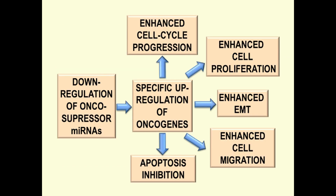Finally, an important epigenetic regulatory mechanism is represented by the deregulation of several tumor suppressor miRNAs, resulting in specific overexpression of genes that enhance cancer progression, cell proliferation, epithelial-mesenchymal transition, and cell migration, and inhibit apoptosis.